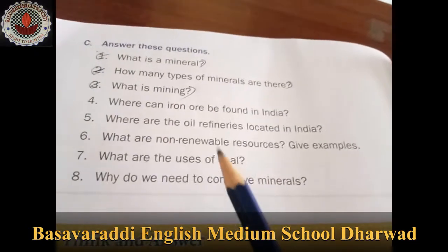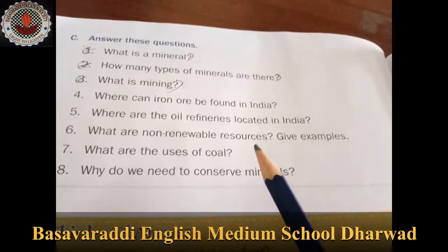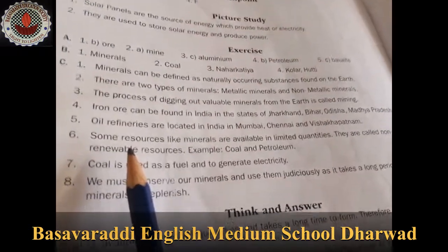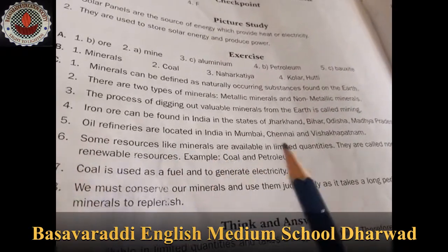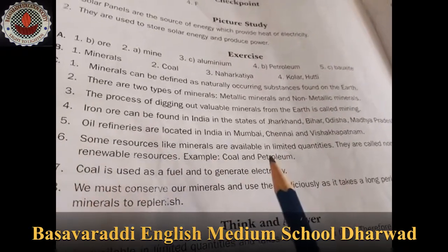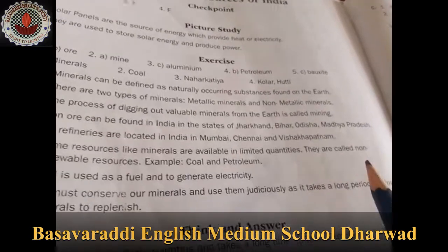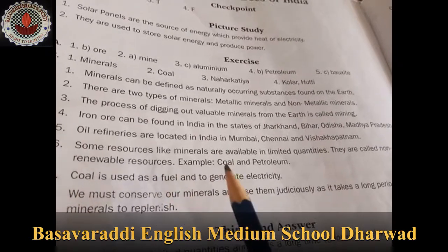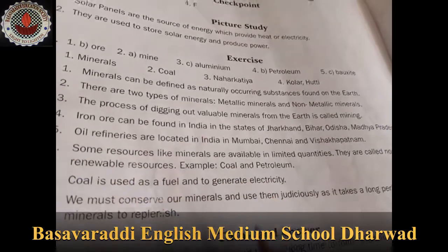Sixth question: What are non-renewable resources? Give examples. Some resources like minerals are available in limited quantities. They are called non-renewable resources. For example, coal and petroleum.